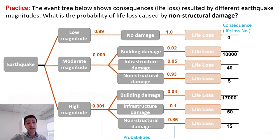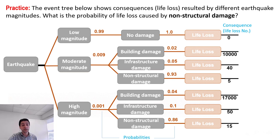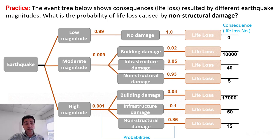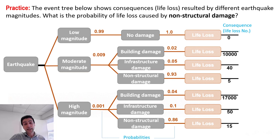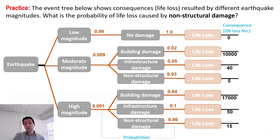The question here is the probability of life loss caused by non-structural damage. Looking at the middle branch for moderate magnitude, there is non-structural damage, and we multiply 0.9% by 0.93. There is another non-structural damage on the bottom branch, so we multiply 0.1% by 0.86. The sum of these two values from the middle and bottom branches for non-structural damage gives the answer. I encourage you to pause the video and calculate this for yourself.